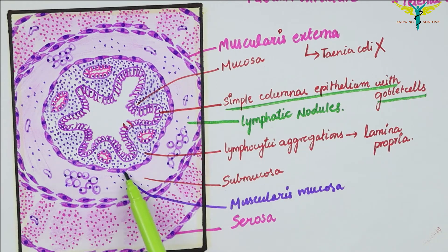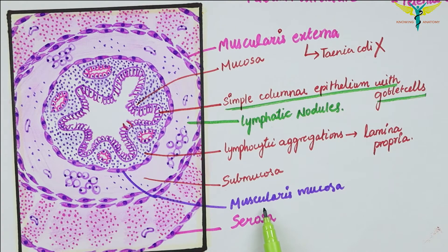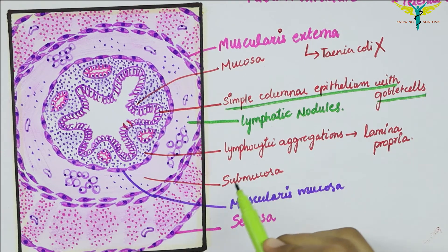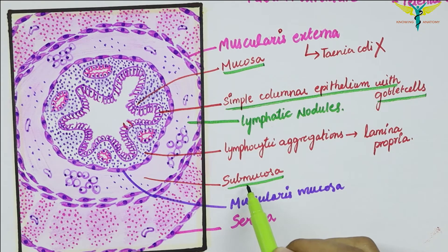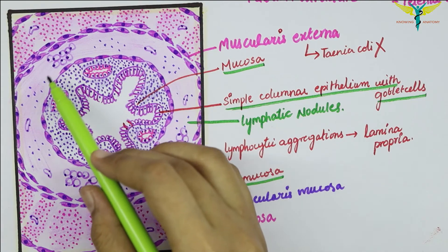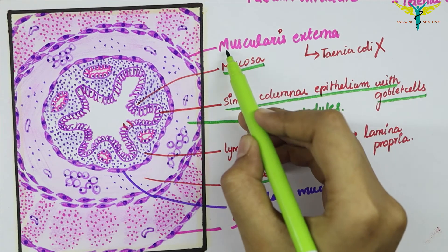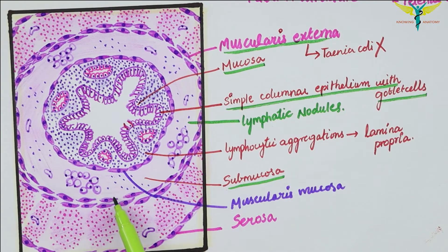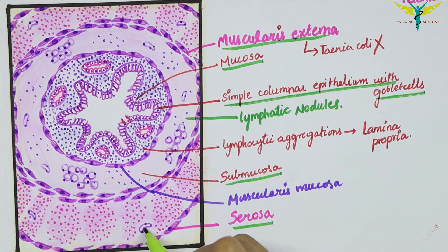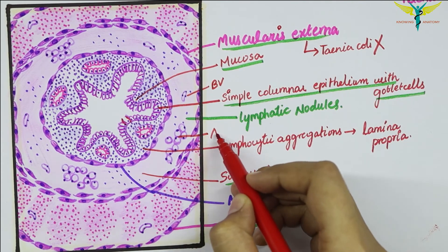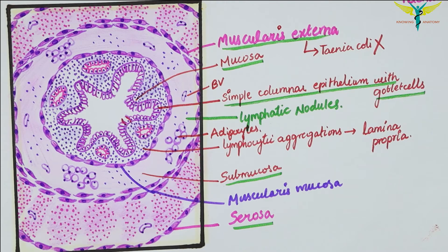The mucosa is the first layer; within it the muscularis mucosa is a thin smooth muscle layer. The submucosa is the second layer and contains loosely aggregated lymphatic nodules. The third layer is the muscularis externa — you can see the submucosa surrounded by this smooth muscle layer. The outermost layer is the serosa, where you can also see the presence of blood vessels and adipocytes.